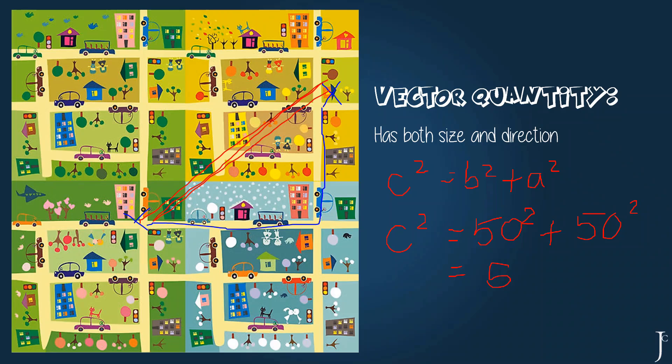Which comes out to be 5,000. And then to determine C, we would have to do the square root of 5,000, which comes out to be 70 metres.